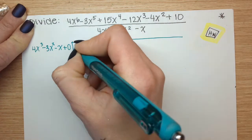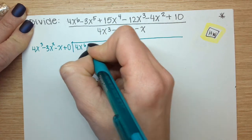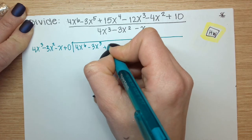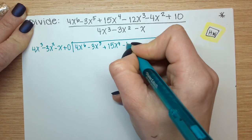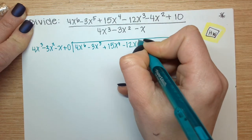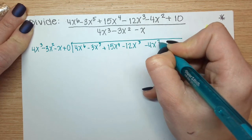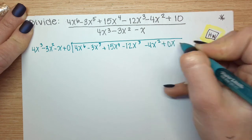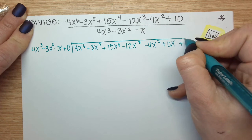Now here, my largest power appears to be 6. 5, 4, 3, 2. Here's my linear term that I was missing and there's my constant term.